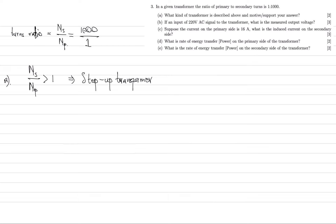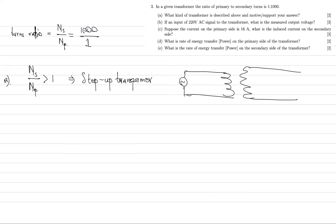Now we are told that this transformer is connected to a power source — specifically an AC signal with a voltage of 220 volts. We're asked what is the output voltage. So we have two terminals with windings, we put a power source and an AC signal on the primary side, and here's the secondary side. Suppose we were to put a voltmeter on this side of the circuit — the question is, what are we going to read on this side?